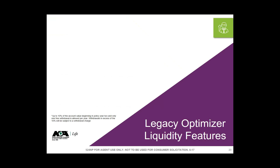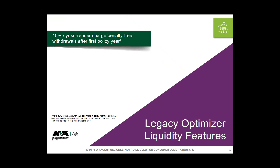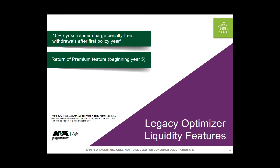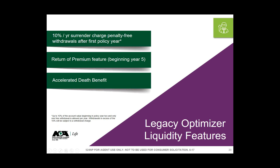For liquidity features, cash value can be accessed through withdrawals or standard policy loans. If you stay in the policy until year five, more benefits kick in: the premium bonus begins, and there is also a return of premium feature starting in year five. For terminal or chronic illness, the product provides access to funds that can serve as an alternative or supplement to an existing long-term care policy — specifically an acceleration of the death benefit for certain qualifying conditions.